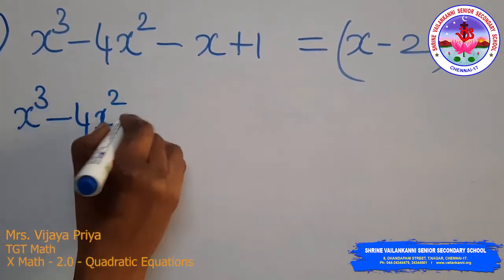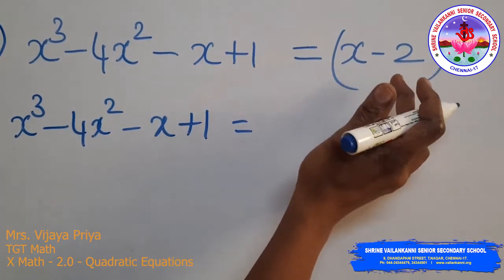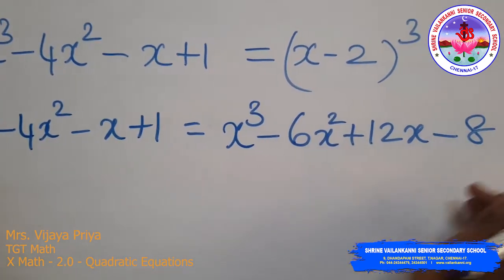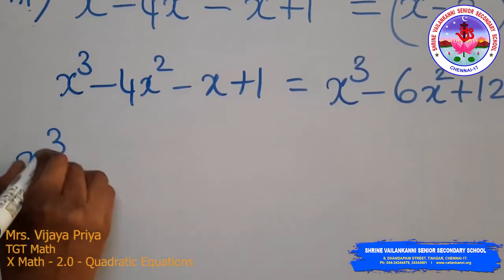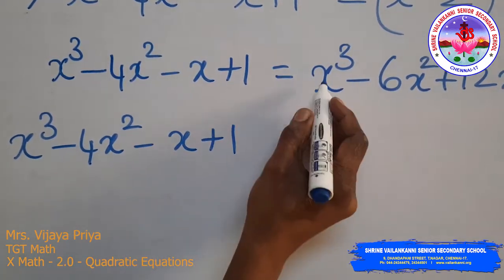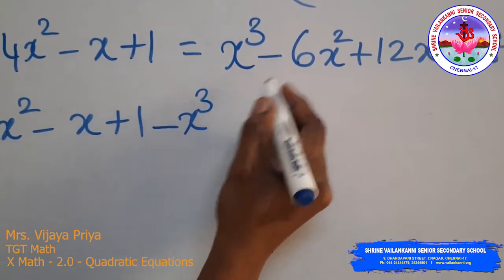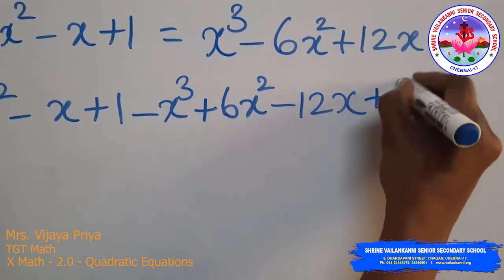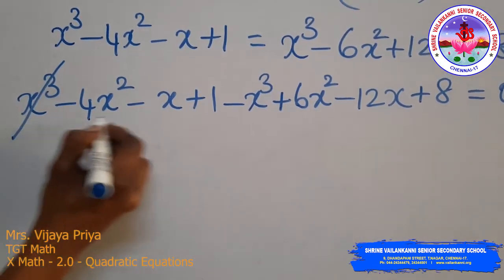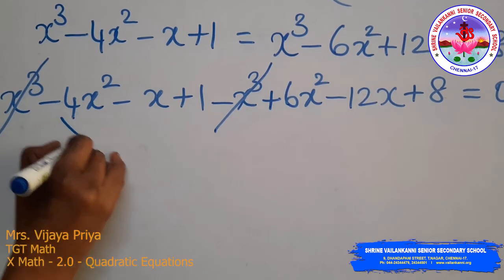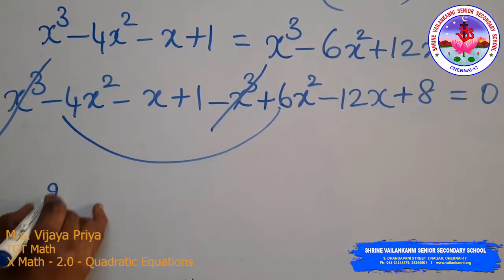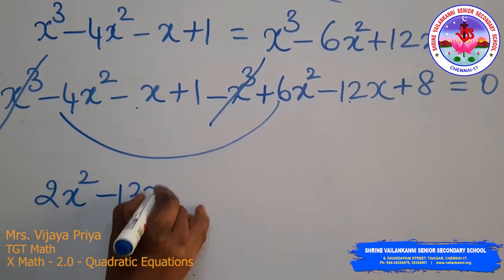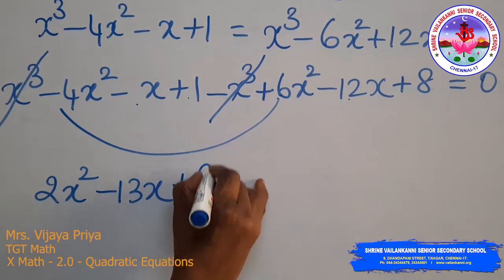Bringing all RHS terms to the left hand side: x³ − 4x² − x + 1 − x³ + 6x² − 12x + 8 = 0. The x³ terms cancel. Combining like terms: 2x² − 13x + 9 = 0.